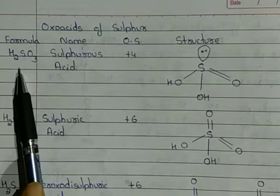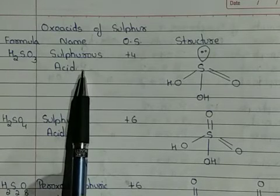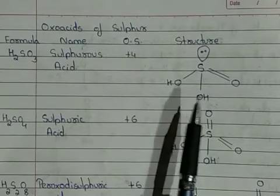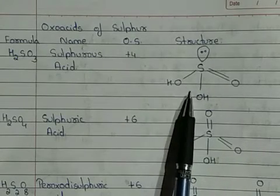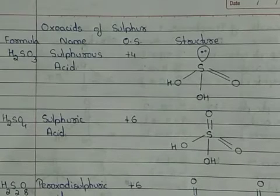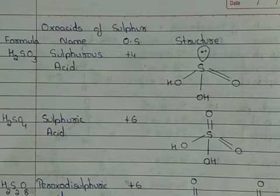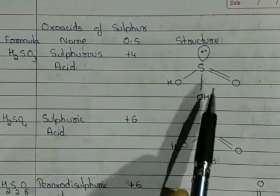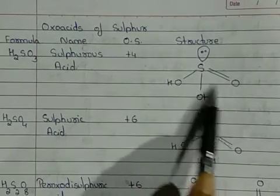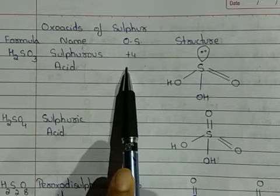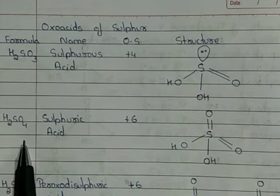The first oxo acid is sulfurous acid (H₂SO₃), in which the oxidation state of sulfur is +4. In its structure, the central sulfur atom has two S–OH bonds, one S=O double bond, and one lone pair of electrons, giving it four bonds total consistent with oxidation state +4. Questions on oxo acid structures often ask about the number of S–OH bonds, S=O bonds, or lone pairs present, so the structure must be remembered.